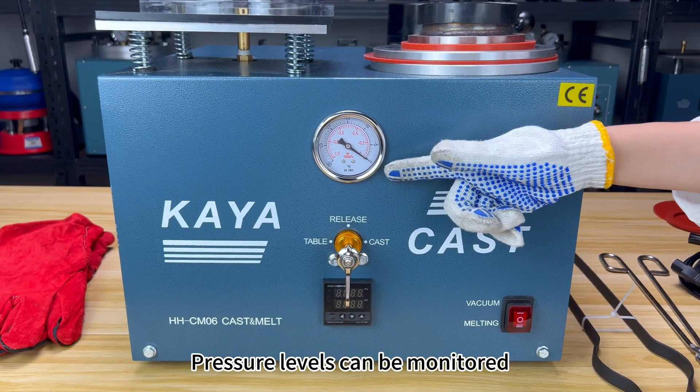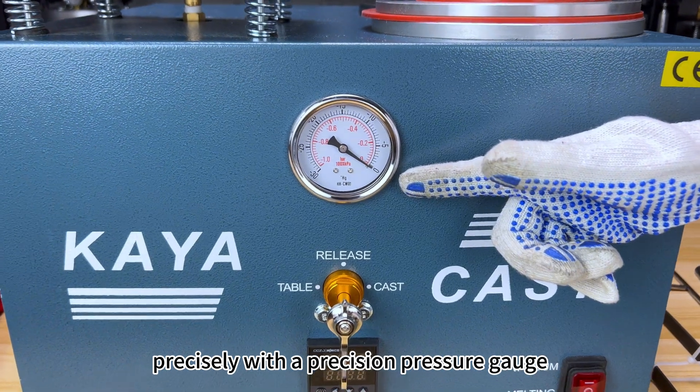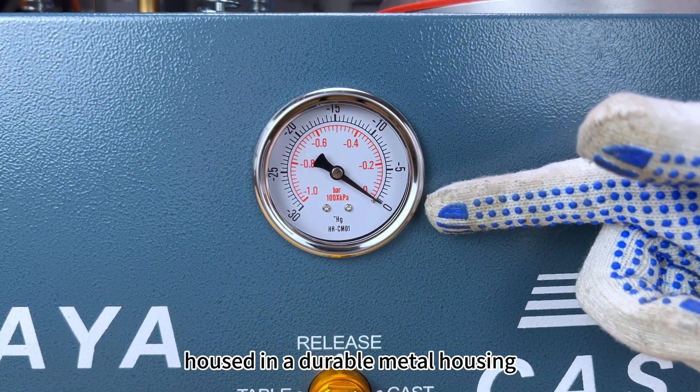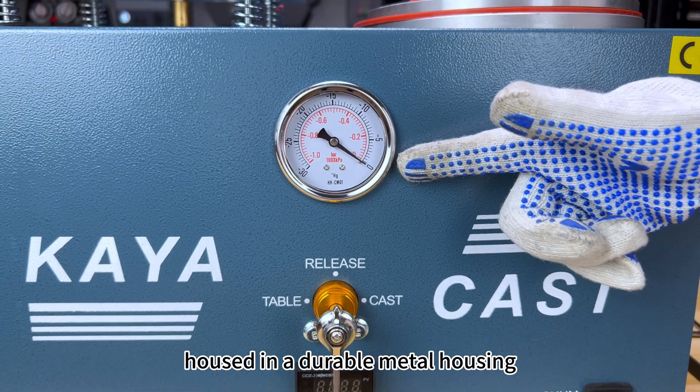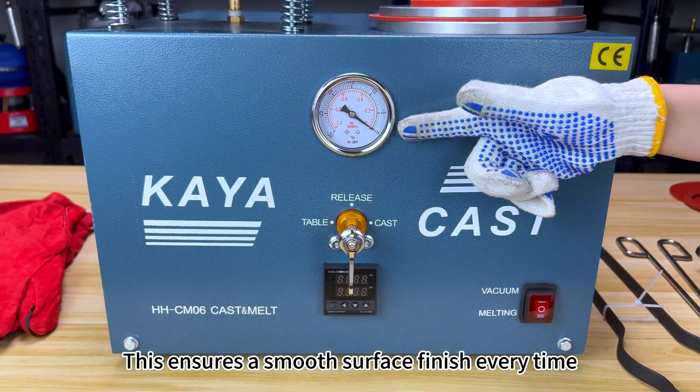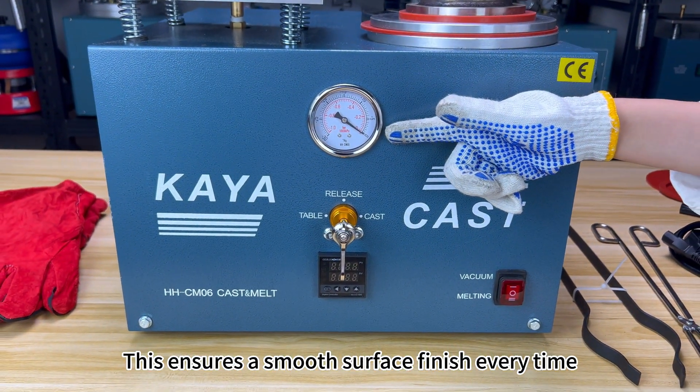Pressure levels can be monitored precisely with the precision pressure gauge, housed in a durable metal housing. This ensures a smooth surface finish every time.